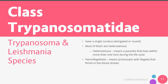Under the kinetoplasta are the Trypanosomatidae. Species under this family have a single elongated or round nucleus, and most of them are heteroxenous, meaning that they live within more than one host during the course of their life cycle. They are also hemoflagellates, which means they thrive in the bloodstream and contain flagella. This class contains two species that you might have heard of: Trypanosoma and Leishmania.